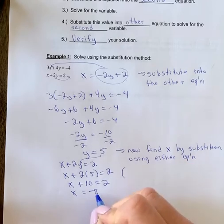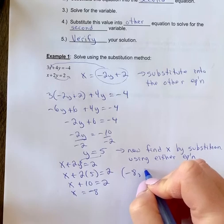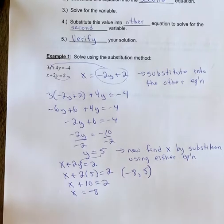So my solution, you write x first. If it's not x and y, you use the smaller variables. Or if it's a word problem, then you would just write out the sentences. Negative 8 and 5.